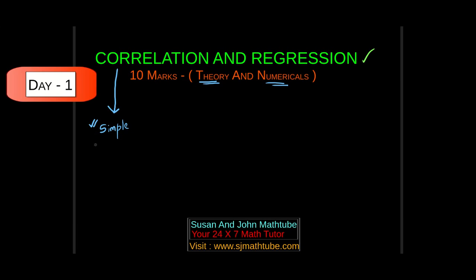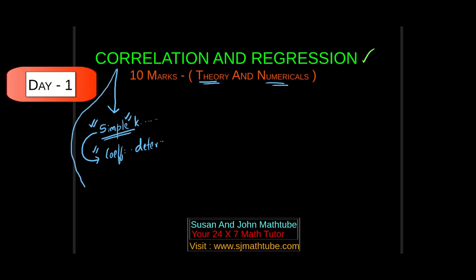The second thing to learn is coefficient of determination. This will also be asked as Carl Pearson's correlation coefficient, or simple correlation. The square of the correlation coefficient is called the coefficient of determination. Then comes a very important topic: partial correlation and multiple correlation.